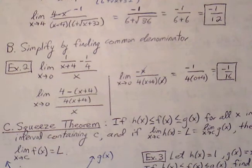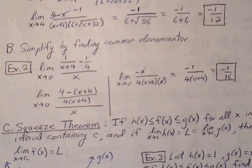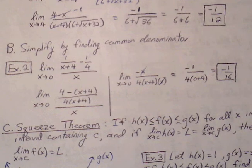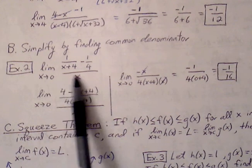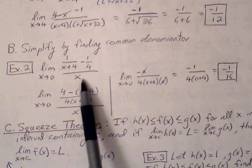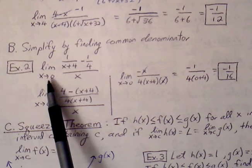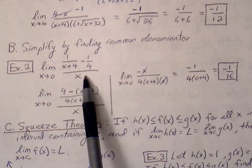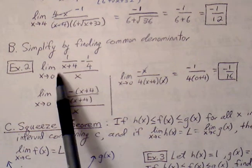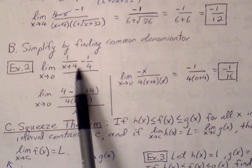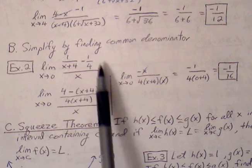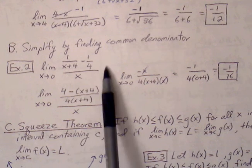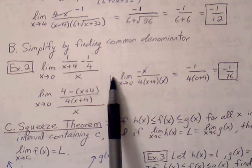Another type of problem involves simplifying by finding a common denominator. Example 2: the limit of a complex expression as x approaches 0. First, we plug in our target x value and get 1/4 minus 1/4, which is 0, all over 0. So 0 over 0 indicates we can do something further with the expression.